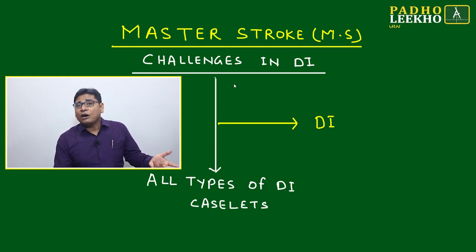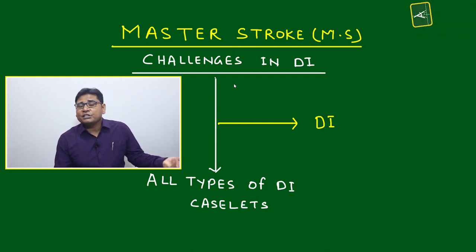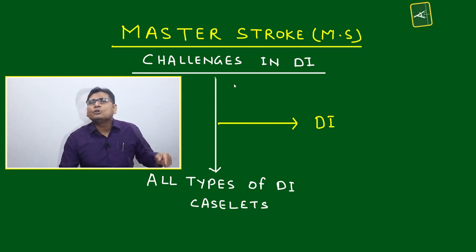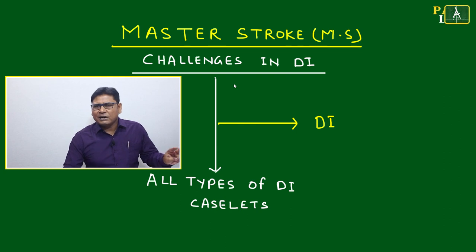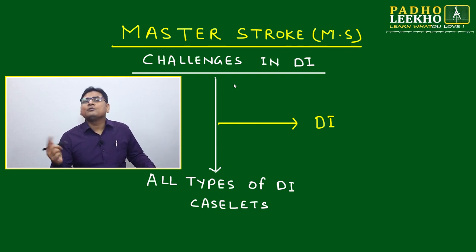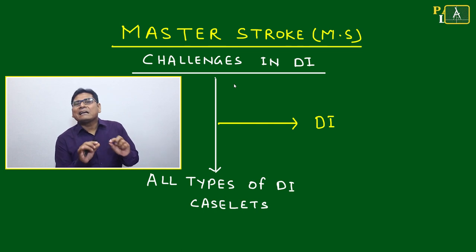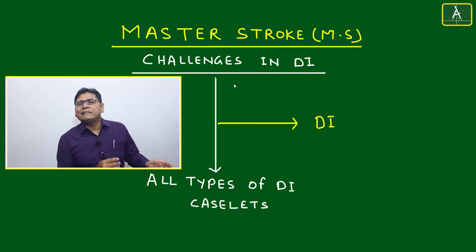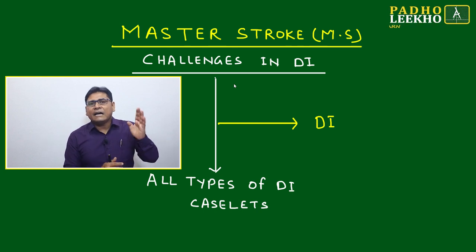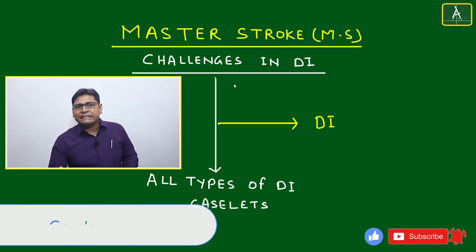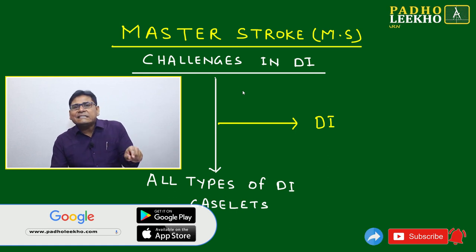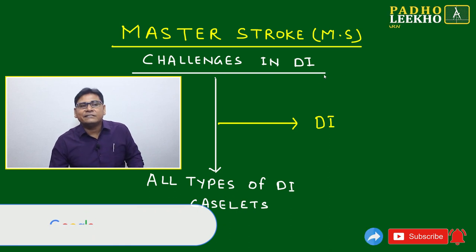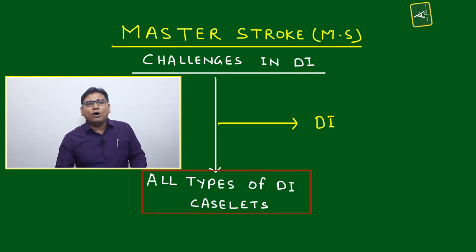Based on that, we will understand how to improve your accuracy and your performance — meaning how to save time and increase accuracy. These two are our main targets: reduce time and improve accuracy. For competitive examinations, and specifically for DI, the same targets apply: time should reduce and accuracy should increase. We have to understand what the challenges in DI are, as they affect all types of DI case lets.